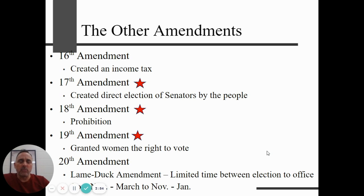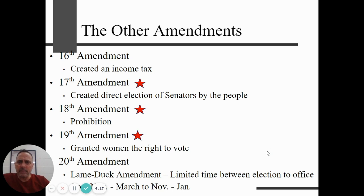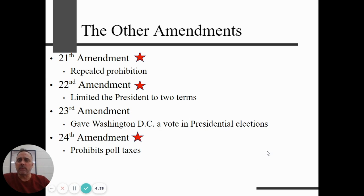The 18th Amendment was a social experiment: prohibition. We outlawed the making, transportation, and sale of alcoholic beverages — though it didn't actually outlaw consumption. The 19th Amendment in 1920 granted women the right to vote, making us one of the last industrial Western Hemisphere nations to do so. The 20th Amendment, the lame duck amendment, moved up the date between the election and when the next president is inaugurated, so it's not such a long period between election and when the previous person leaves.